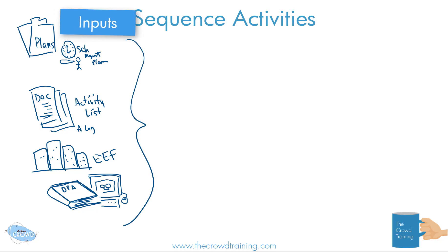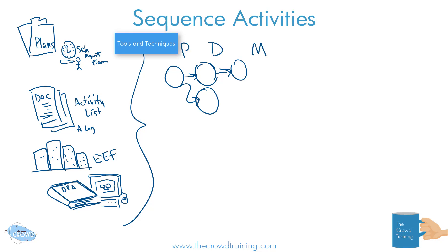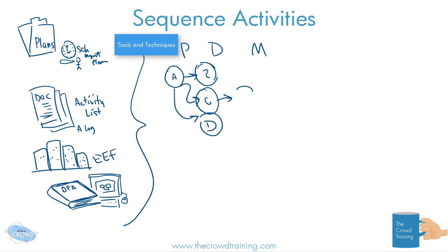Now let's get into the tools and techniques. There is one main method: the Precedence Diagramming Method, or PDM. The idea is that one activity precedes another, things can happen concurrently, and so on. You put your activities on the diagram — I'll just use some letters here — and then figure out the order: D has to go at the same time as C, C feeds into F, and we need activity B before A. That's essentially what's happening in the precedence diagramming method.